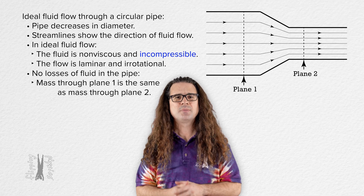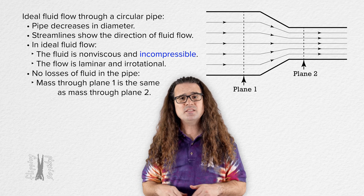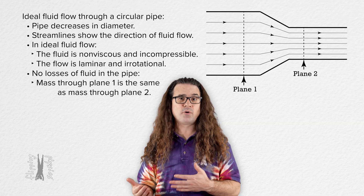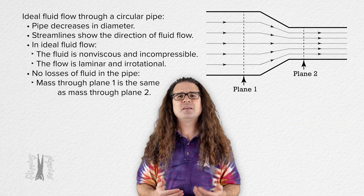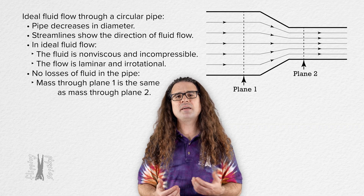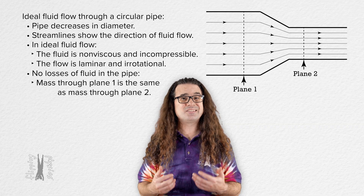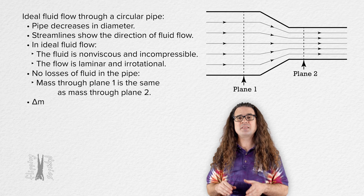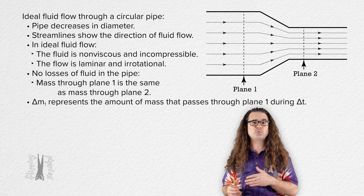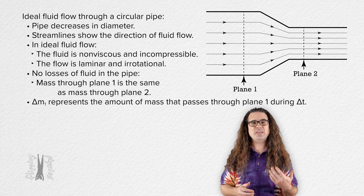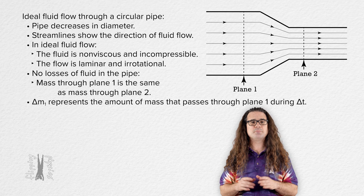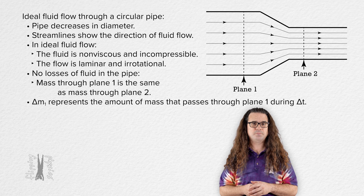Because these are masses of fluids flowing through a plane, let's identify these masses as delta m, where delta m represents the amount of mass which passes through each plane during a change in time delta t.